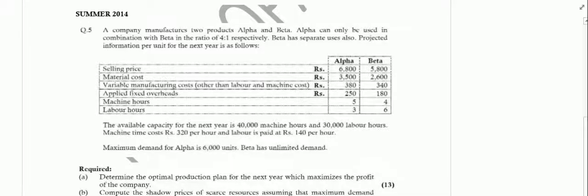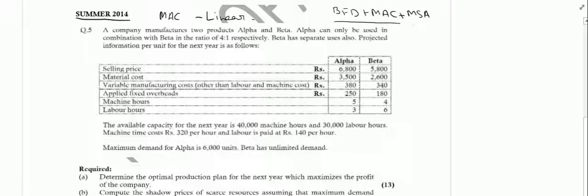In this video, I will solve summer 2014 Mac pass paper question for linear programming. The question is relevant for BFD as well as Mac and MSE exams. Let us solve the question. The question says the company manufactures two products, alpha and beta. There are two products, alpha. Let's represent alpha with X and beta, let us represent beta with Y.